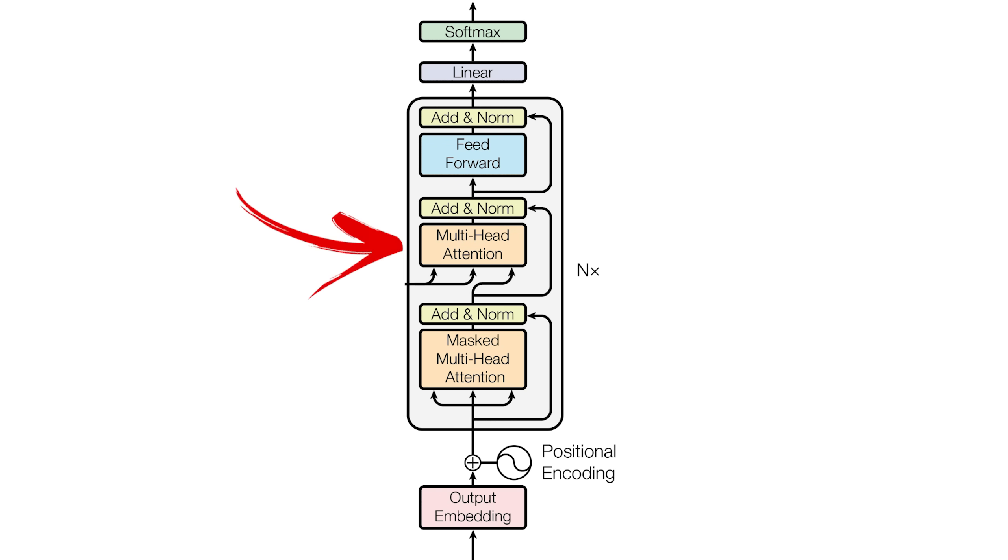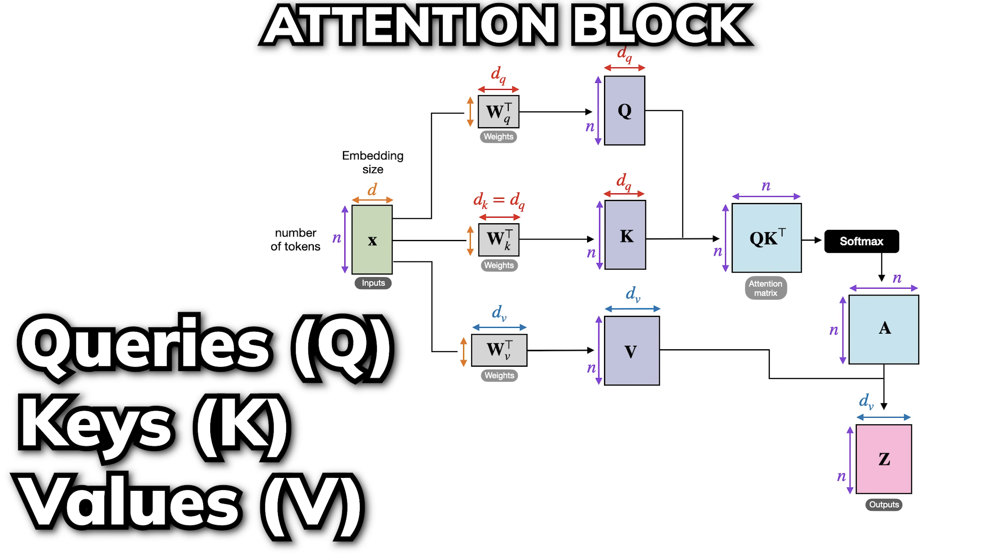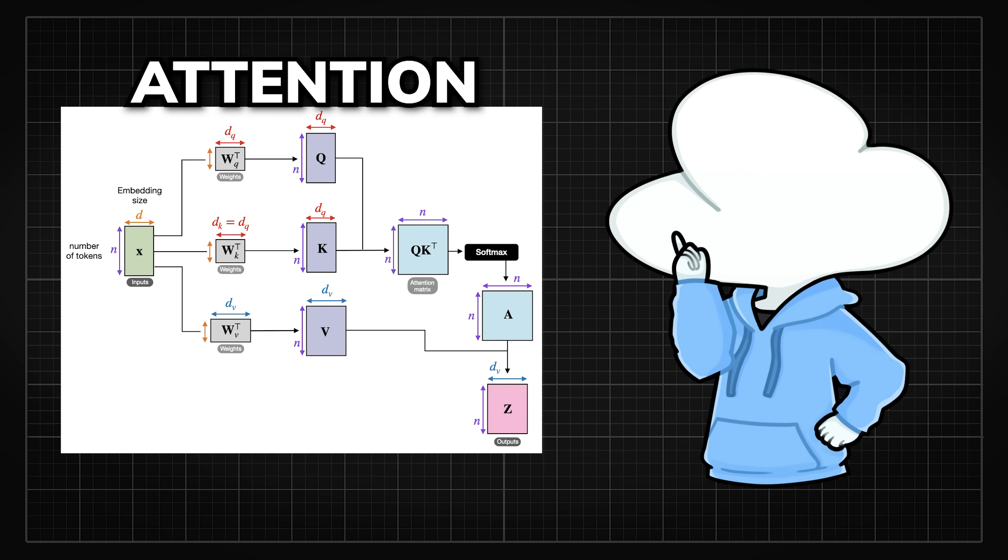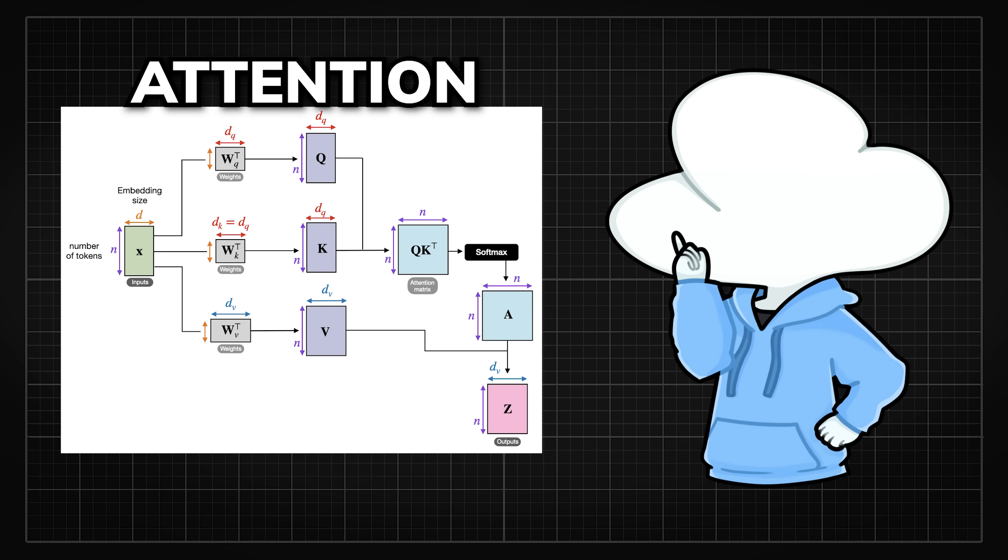Anyways, the attention mechanism at the heart of a transformer is powered by three crucial components: queries, keys, and values. A lot of research has focused on trying to make this mechanism more efficient or accurate. And to give you a quick rundown of how it works,